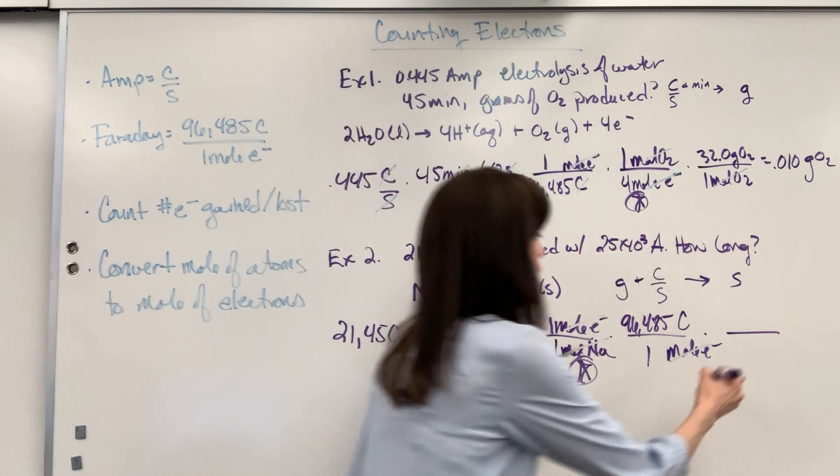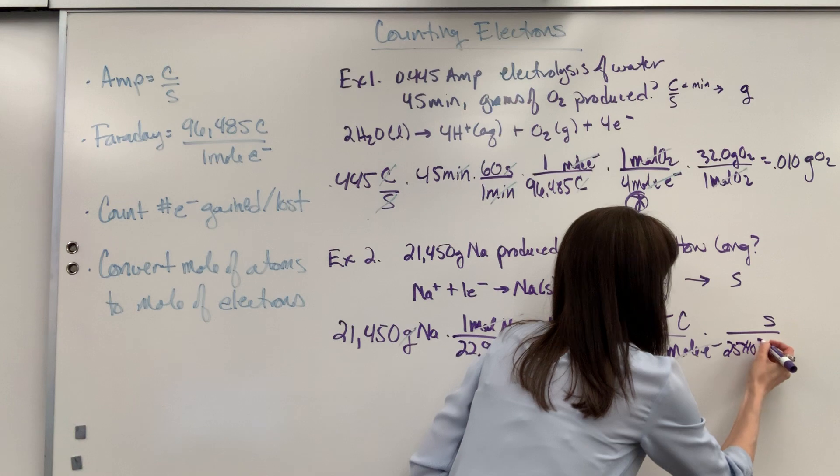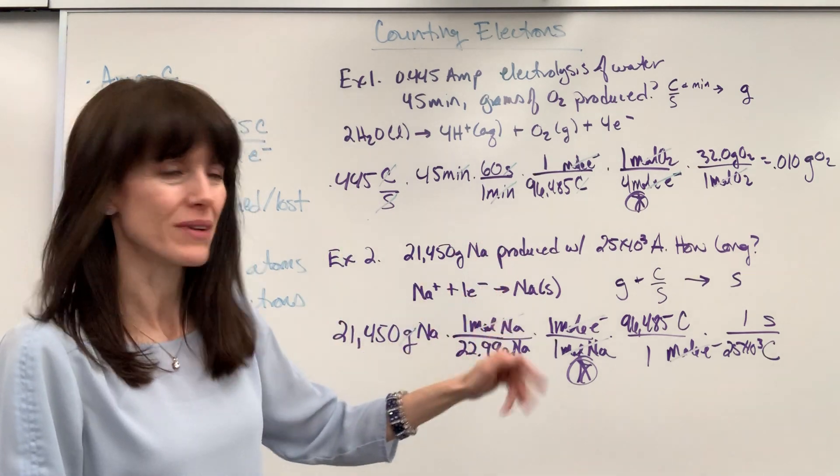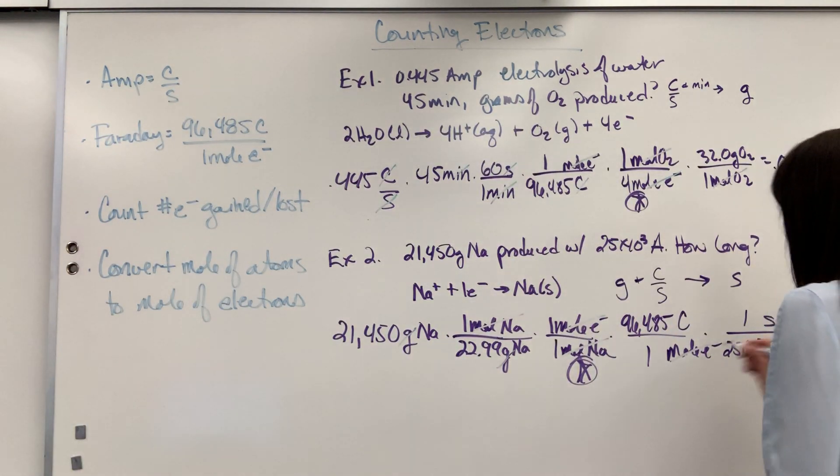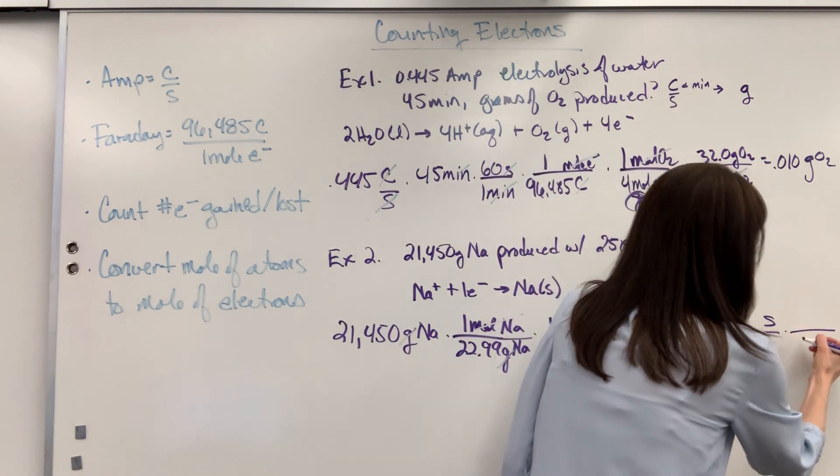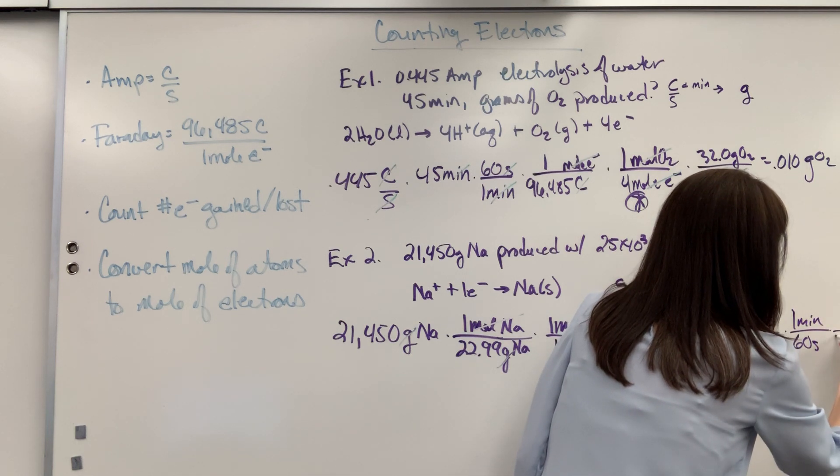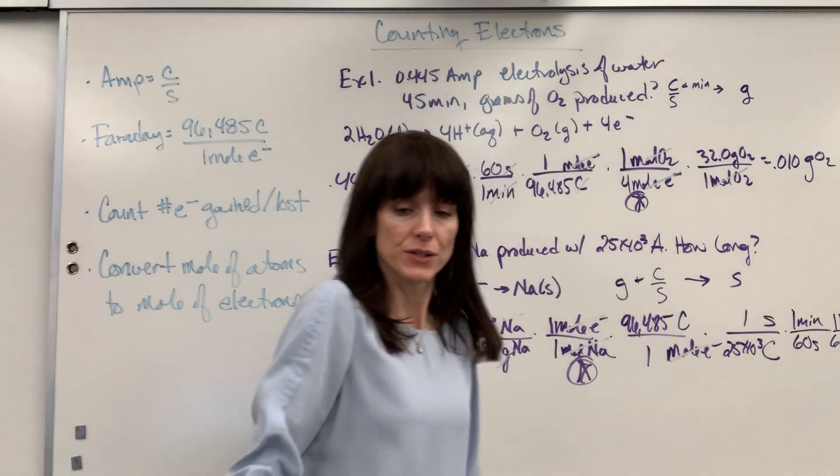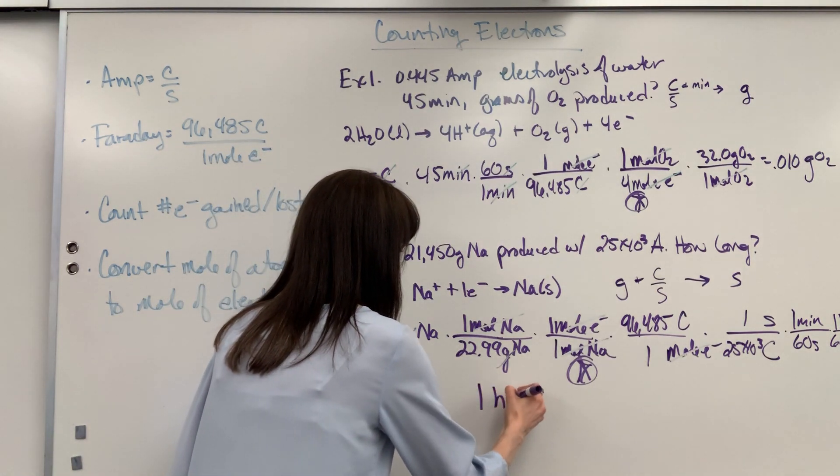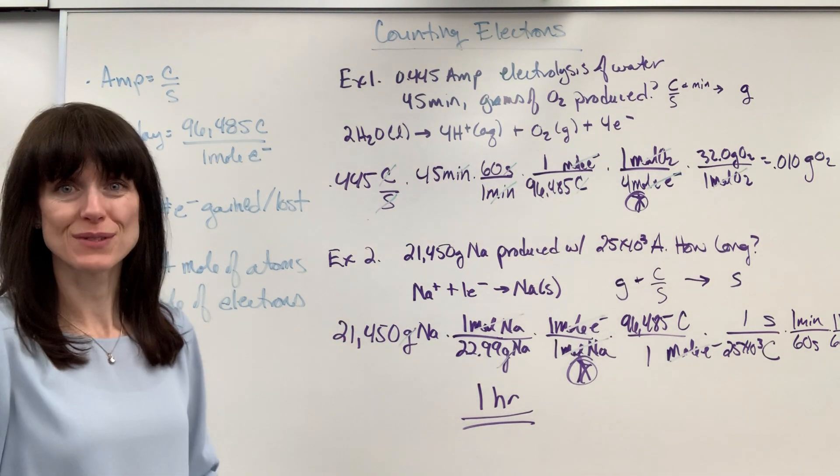Remember amperage, again, coulombs per second. We want coulombs to cancel, second to stay, and so we've got the 25,000. So, 25 times 10 to the three coulombs for every one second. Wow, wow. That's really a lot of current moving in one second. Now, I know that this is going to be a big number, so I'm quickly just going to put this over to, let's put it into hours, that we will have, let's see, 60 seconds in one minute, and you've got 60 minutes in the one hour. So, if we do all this multiplication and division, you'll be able to tell I rigged this. The answer is one hour. Wow. With that amperage, it only takes an hour to plate 21,450 grams of sodium. Pretty cool.